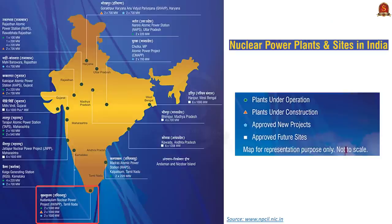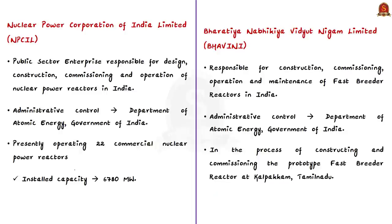Currently, NPCIL has eight reactors of 6,200 megawatts total capacity under construction. In case of construction of fast breeder reactors — Stage 2 — the Bharatiya Nabhikiya Vidyut Nigam Limited (Bhavini), a government company under the administrative control of the Department of Atomic Energy, is the responsible authority. Bhavini is in the process of constructing and commissioning the prototype fast breeder reactor at Kalpakam, Tamil Nadu, and will also be responsible for construction, commissioning, operation, and maintenance of subsequent fast breeder reactors in India.